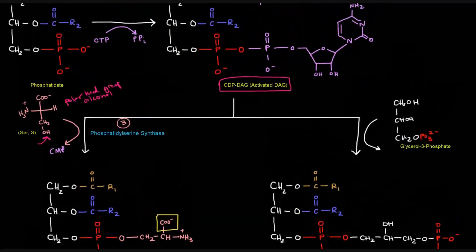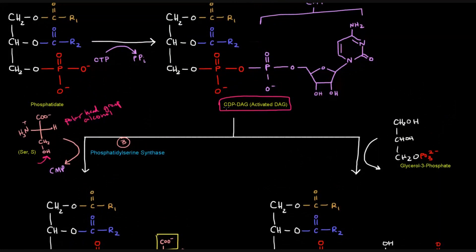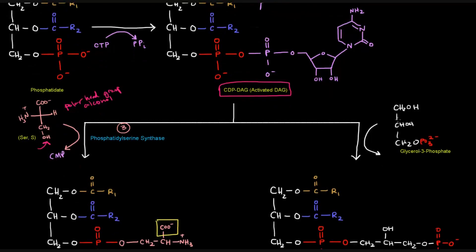Another case could be replacing the CMP portion on the CDPDAG with a different alcohol, say, glycerol 3-phosphate. And in glycerol 3-phosphate, this might be helpful to sort of track these carbons. If we number these carbons as one, two, and three here,